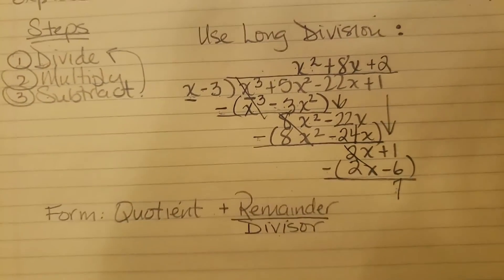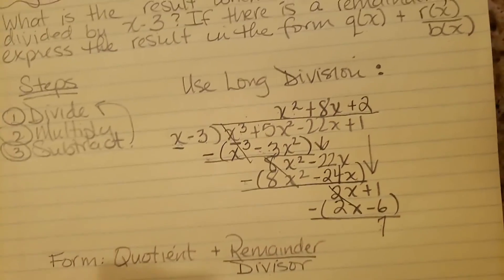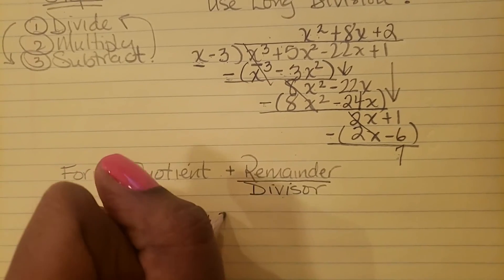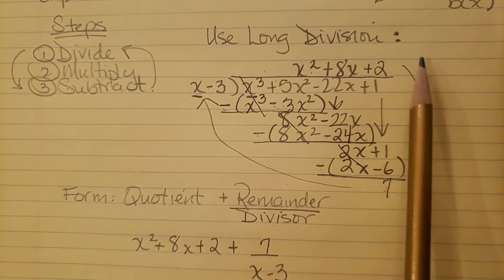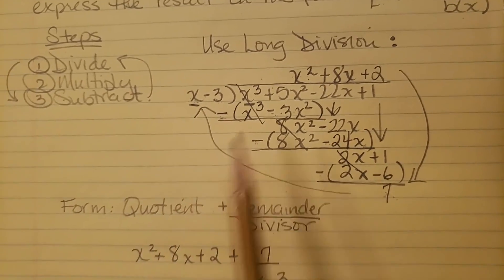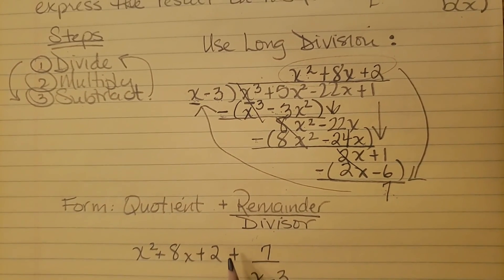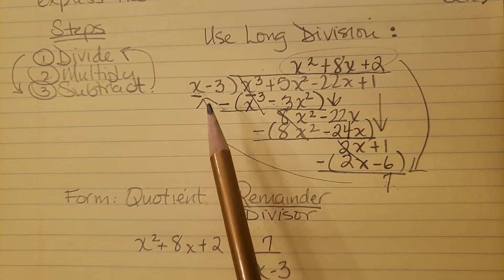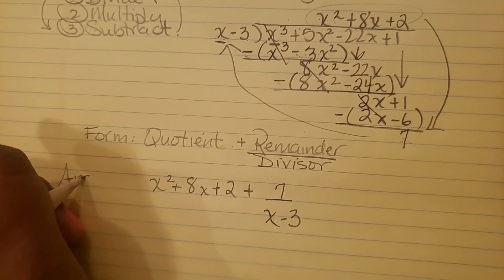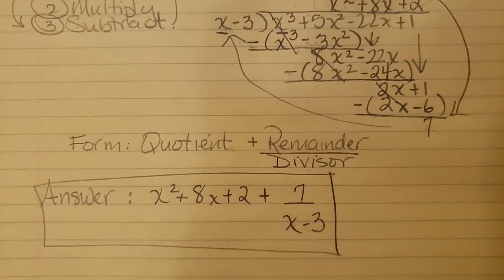So how do we write our final answer when we have a remainder? Well, we put the quotient, which is this piece up here. x squared plus 8x plus 2 plus 7 over x minus 3. So it's like we go in this big little loop here. So it's this plus this over this. This whole top piece plus, and you make a fraction out of it. Okay. If this was a negative number, we would say minus 7. Since it's a positive remainder, we say plus 7 over whatever our divisor was. And this is our answer.